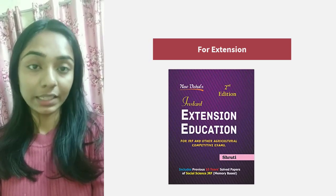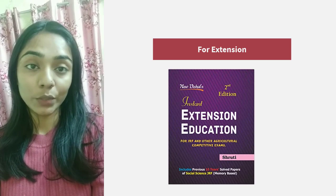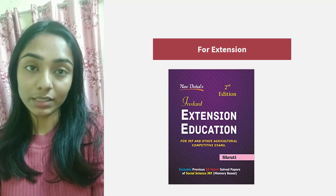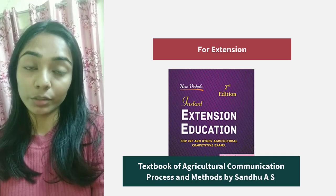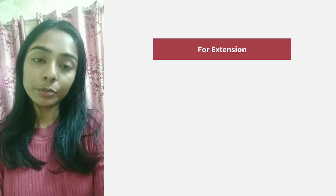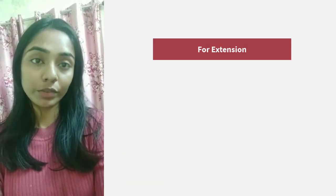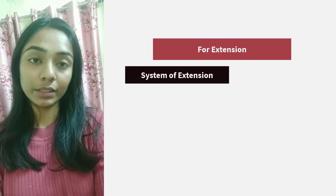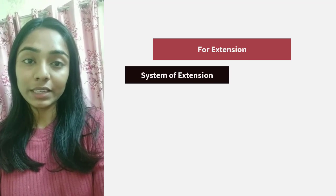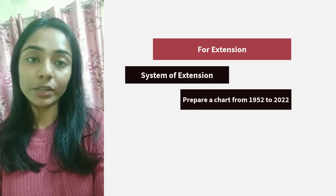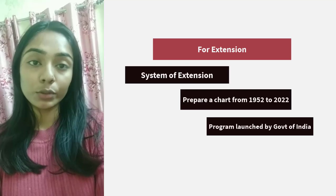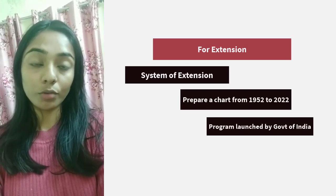Both G.L. Rae and Shruti are enough, but for communication I would say it requires some extra concepts that you won't find in G.L. Rae. For that, refer to a book on communication by A.S. Sandhu — read it once, especially the models of communication section, and make notes from it. Don't read it repeatedly; it will save your time. Another important portion in extension is Systems of Extension, covering all programs launched in India under Rural Development and Extension Education. I prepared a chart from 1952 to 2020 of all programs launched by the Government of India or Ministry of Rural Development — it is very important in the exam.